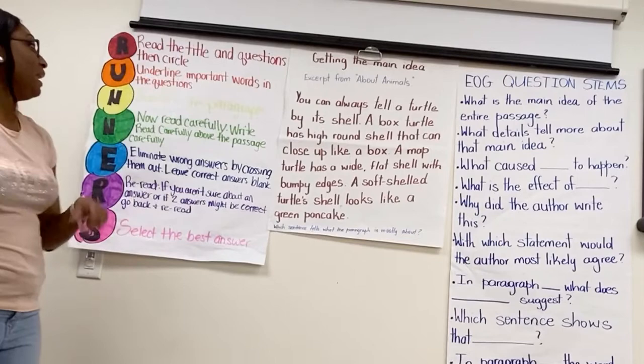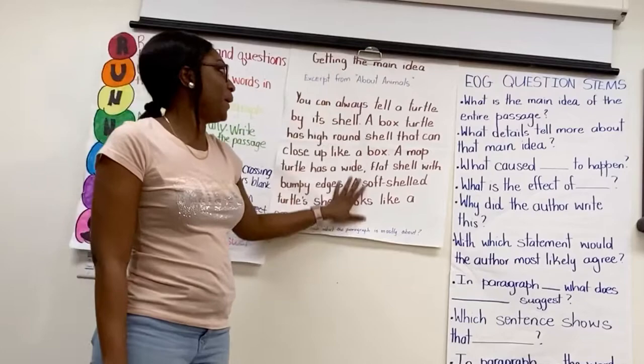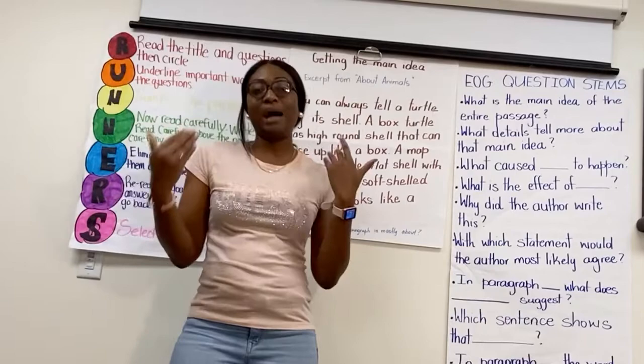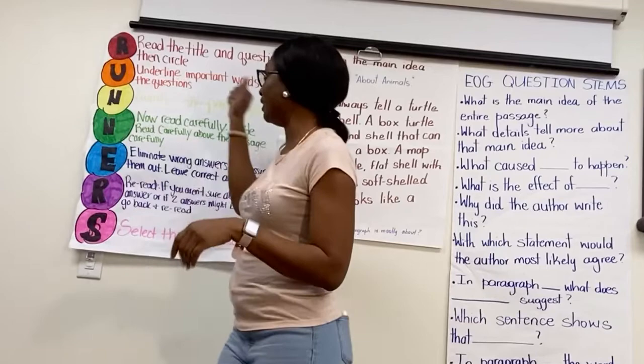R says: read the title and questions and then circle. Right here, I have our passage and the title is 'Excerpt from About Animals.' That's the title. When I read my title, it says 'About Animals,' so I'm thinking 'About Animals' has to be informational text. So, I did my R.